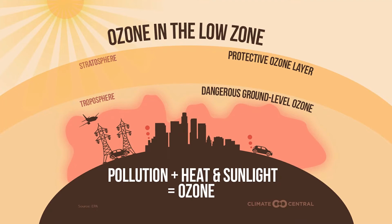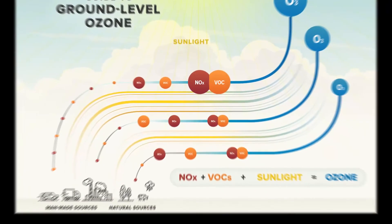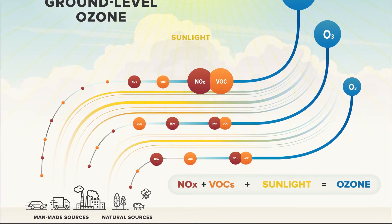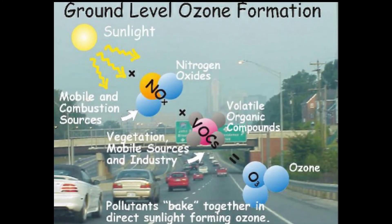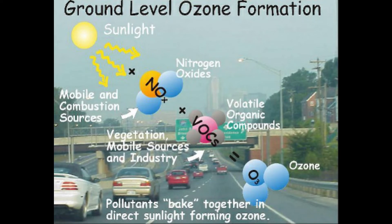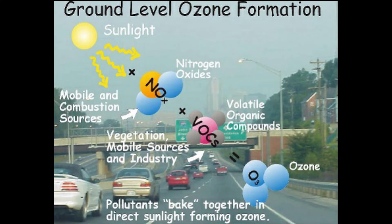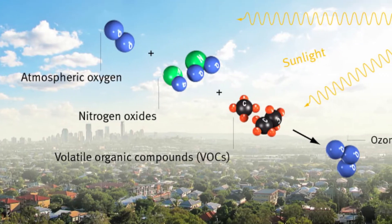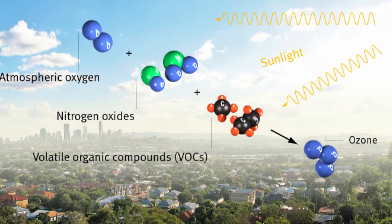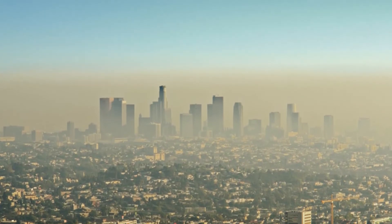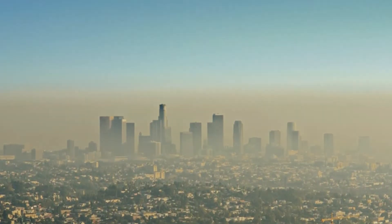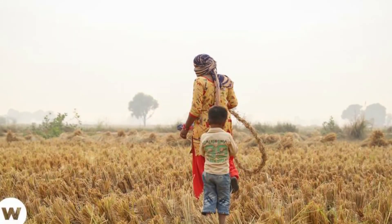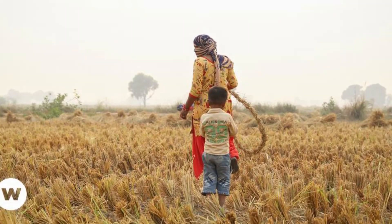Tropospheric or ground-level ozone is not emitted directly into the air but is created by chemical reactions between oxides of nitrogen and volatile organic compounds. This happens when pollutants emitted by cars, power plants, industrial boilers, refineries, chemical plants, and other sources chemically react in the presence of sunlight. Ozone is most likely to reach unhealthy levels on hot sunny days in urban environments but can still reach high levels during colder months. Ozone can also be transported long distances by wind, so even rural areas can experience high ozone levels.